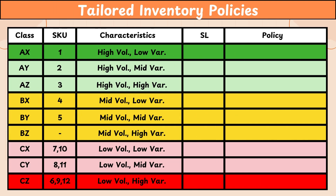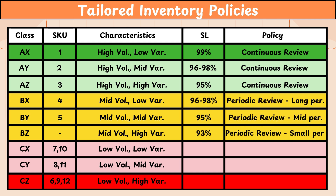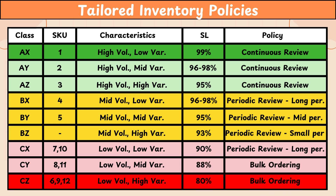We have reached the last part of our video: setting tailored inventory policies. The AX category requires a service level of 99% and a continuous review approach due to its high value. A similar approach can be used for AY and AZ items. For BX, BY, and BZ items, the service level would be lower and we would follow a periodic review approach. However, as variability increases, the review period would reduce. For CX categories, a long-term periodic review with a service level of 90% is appropriate. For CY and CZ, we can go for bulk ordering as and when required.